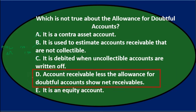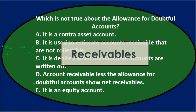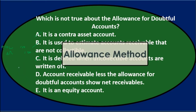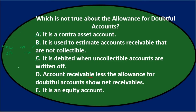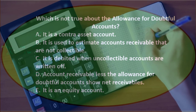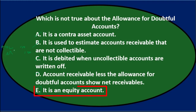D says accounts receivable less the Allowance for Doubtful Accounts shows net receivables — that's true. Receivables represent what people owe us; the allowance represents what we think won't be paid; the difference is the net receivable. So we're left with E, which says it is an equity account — and that's not true. It's a contra asset account with a credit balance rather than a debit balance. Answer E.